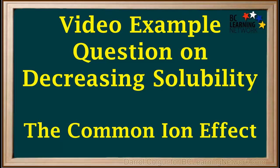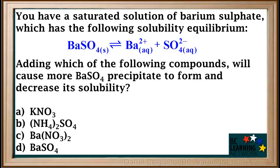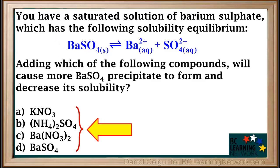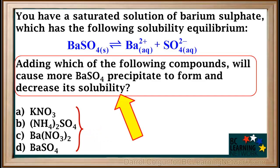Here we'll go through an example question on decreasing solubility using the common ion effect. You have a saturated BaSO4 solution and a list of possible compounds to add. You are asked which of these added compounds will cause more BaSO4 precipitate to form and therefore decrease its solubility.